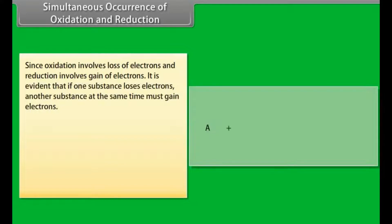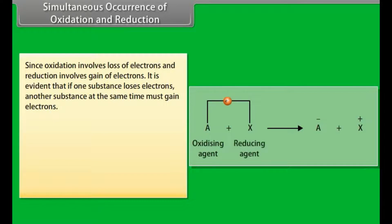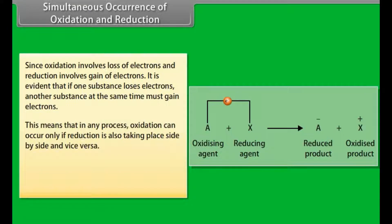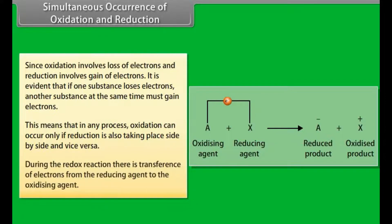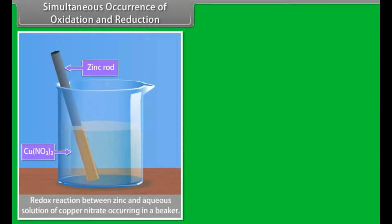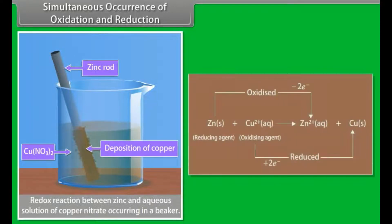Since oxidation involves loss of electrons and reduction involves gain of electrons, it is evident that if one substance loses electrons, another substance at the same time must gain electrons. This means that oxidation can occur only if reduction is also taking place simultaneously, and vice versa. During a redox reaction, there is transference of electrons from the reducing agent to the oxidizing agent. In this reaction, zinc atoms lose electrons and are oxidized to zinc ions, whereas cupric ions gain electrons and are reduced to copper atoms. Here, cupric ions act as the oxidizing agent and zinc atoms act as the reducing agent.